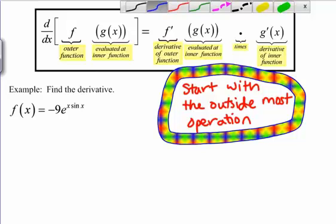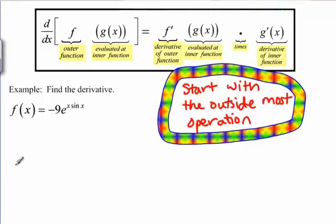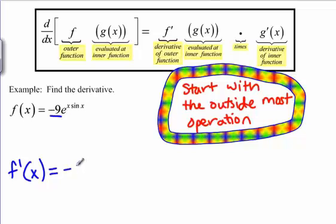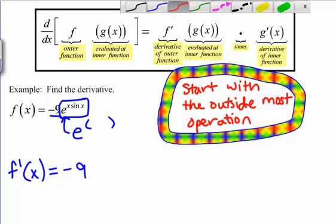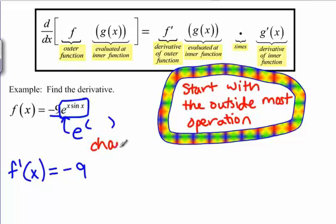We're going to start with the outermost operation. The outermost thing going on in negative 9 e to the x sine x is the multiplying by negative 9. Multiplying by negative 9 is a constant, and it just comes along out front. Now that we've taken care of that, we look at e to the x sine x. The outermost thing going on there is the e — e to the something takes care of everything else going on in this equation. The first thing we need to do is use the chain rule; the composition of e with these other functions is the outermost thing.